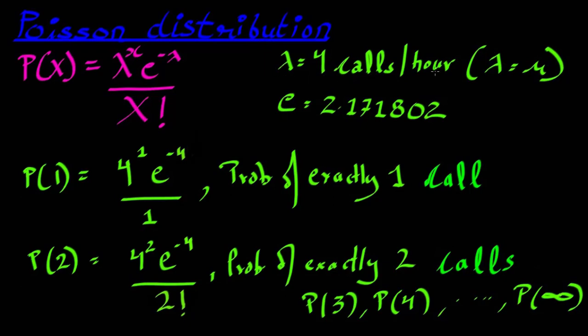And we have lambda that is four calls per hour. We have lambda equals mu, that is lambda equals mean. Now, e we know, this is the constant value of e is 2.17 and so on.